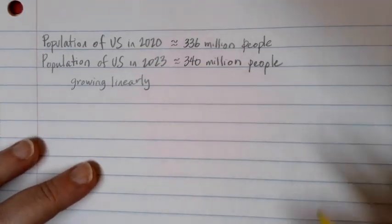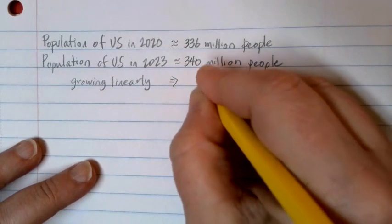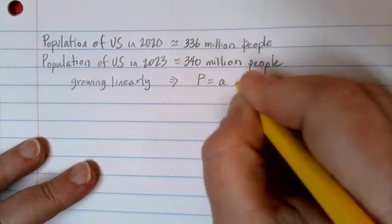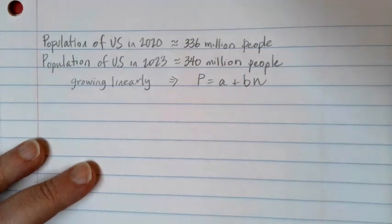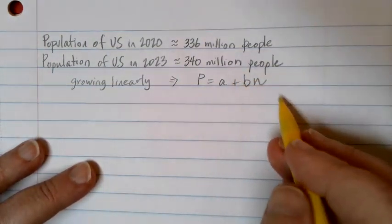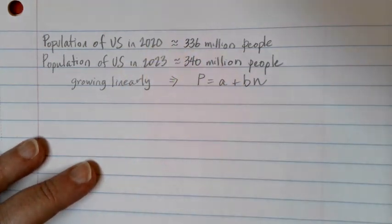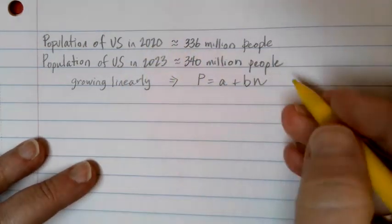All right, so the first thing if we look at, because we know we're growing linearly, we can use our general linear equation, P equals A plus B times N. Now, let's identify our A and B values, because that's what's important in figuring out our equation.